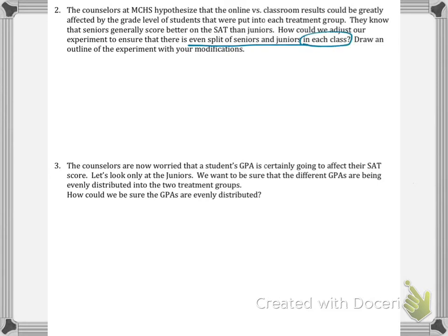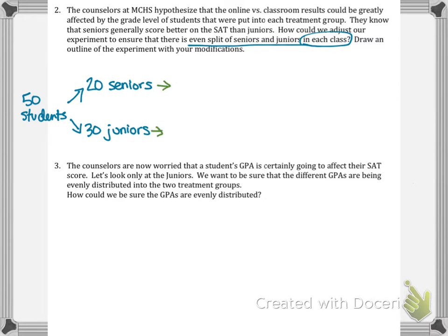So how could we adjust our experiment to ensure there's an even split of seniors and juniors in each class? We're going to outline this experiment with some modifications. We take our 50 students and start by breaking them up into juniors and seniors — 20 seniors and 30 juniors are taking the SAT prep course.